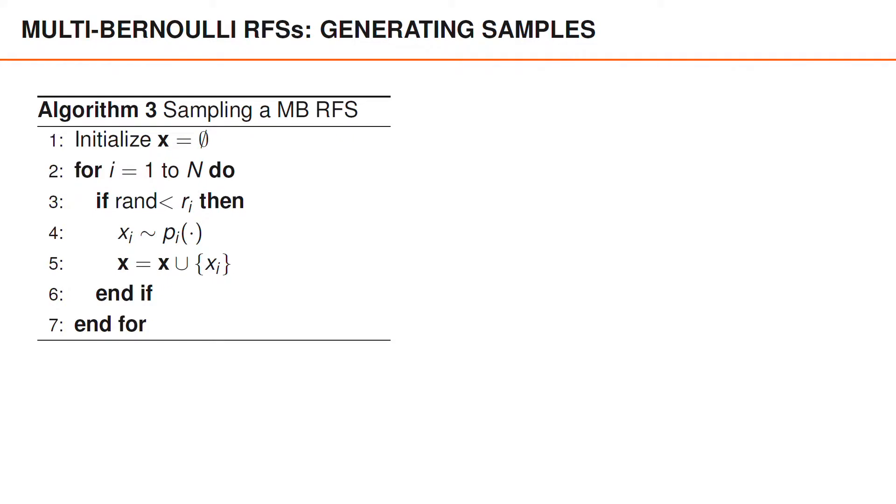Sampling a multi-Bernoulli process is also very simple. You can initialize the set as empty, then loop over all the capital N Bernoulli components. For every component, we generate a uniformly distributed random number between 0 and 1. In MATLAB, this is simply denoted rand. We check if this number is smaller than ri. If rand is smaller than ri, which happens with probability ri, we generate the vector xi from the spatial PDF pi and include xi in the set.